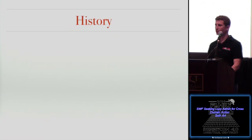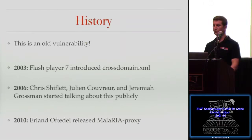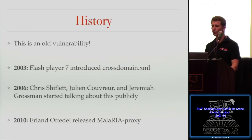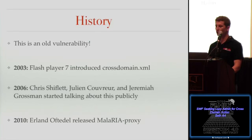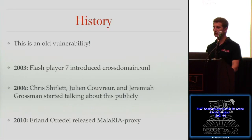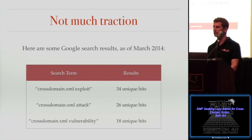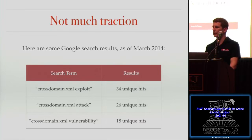This is an old vulnerability. The cross-domain.xml file and the concept of cross-domain requests were introduced in 2003 by Flash Player 7. In 2006, Chris Shifflett, Julian Korver, and Jeremiah Grossman were blogging about and identifying the risk. Julian Korver released proof-of-concept code, and in 2010 Erlen Offadel wrote blogs and released Malaria Proxy, another open-source POC tool. You might be asking why you're hearing this talk at a security conference in 2014 — there's been no public examples of this vulnerability ever being exploited in the wild. Vulnerability scanners report it, but I wanted to know how to create a POC to show clients the true risk.